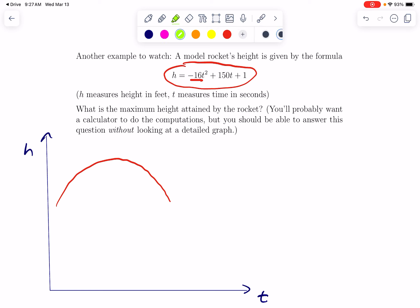So the question is, what is the maximum height attained by the rocket? So our insight here is this is a quadratic. And for a downward opening quadratic, the maximum occurs at the vertex. We just learned a shortcut for how to find the vertex. The x coordinate of the vertex is negative b over 2a. In this particular problem, x, that horizontal coordinate, is actually t for time. So we would have t equals negative b over 2a, which is negative 150 over negative 32.